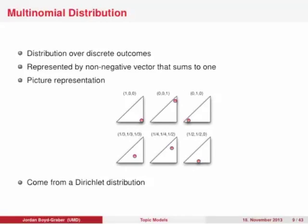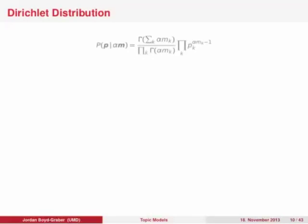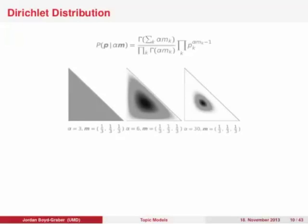We can add another layer and say that each of these multinomial distributions is itself a random outcome, and these random outcomes come from what's called a Dirichlet distribution. A Dirichlet distribution is parameterized by a vector we decompose into two parts: alpha, the variance, and m, the mean. When the mean times the variance equals a vector of all ones, this gives you a uniform distribution over all outcomes. When alpha times m minus 1 equals 0, that basically ignores what's in the variable p_k, so all outcomes are equally likely.